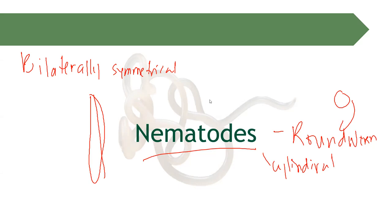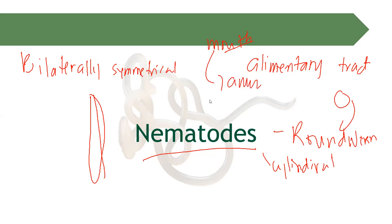That's why our roundworms are capable of surviving in an acidic environment — in our intestine, in our stomach. There is also a connection between the mouth and the anus of our roundworms because they have what we call a digestive tract, also known as the alimentary tract — a connection from the mouth of our nematodes all the way to the anus.